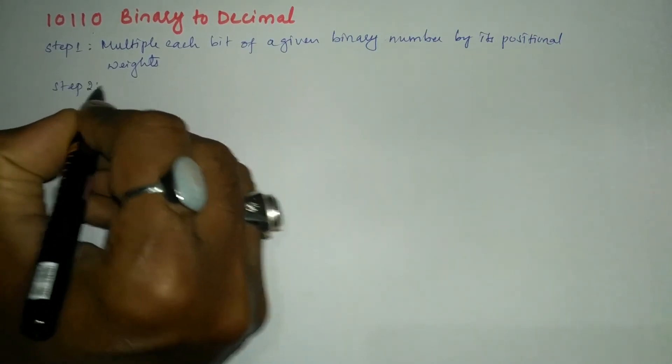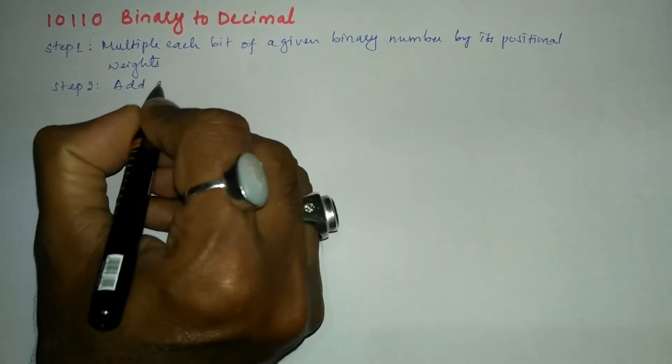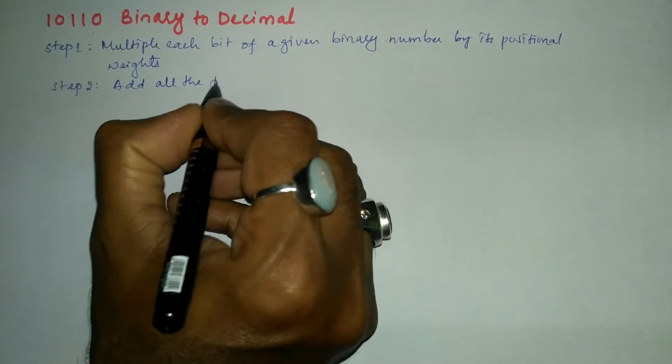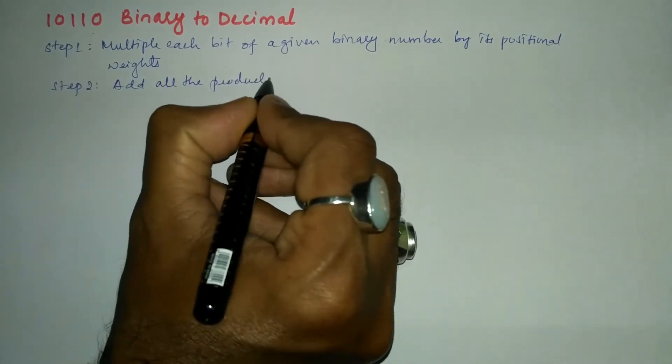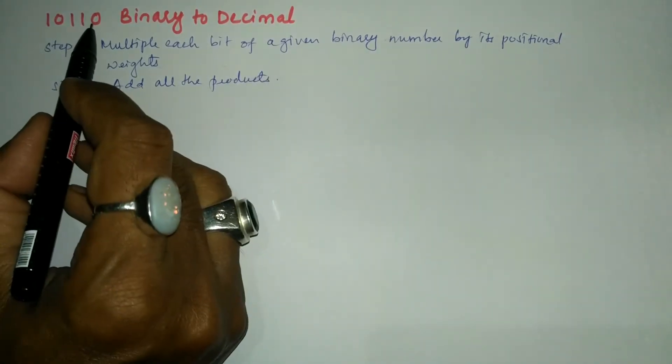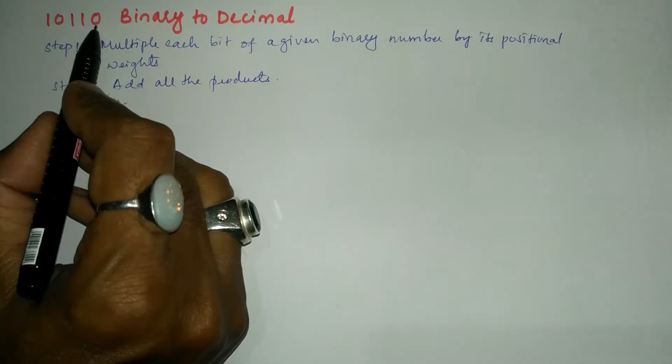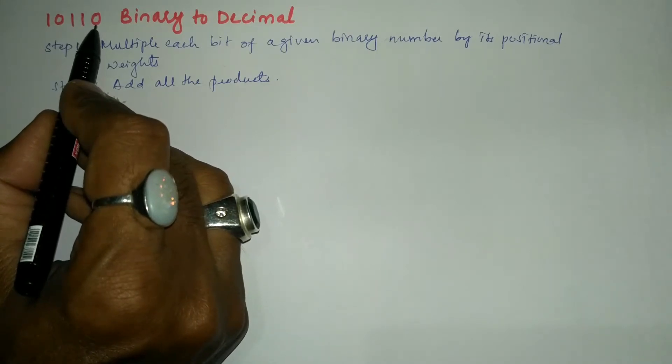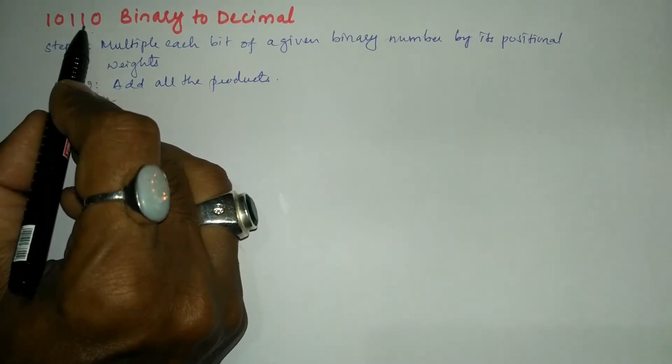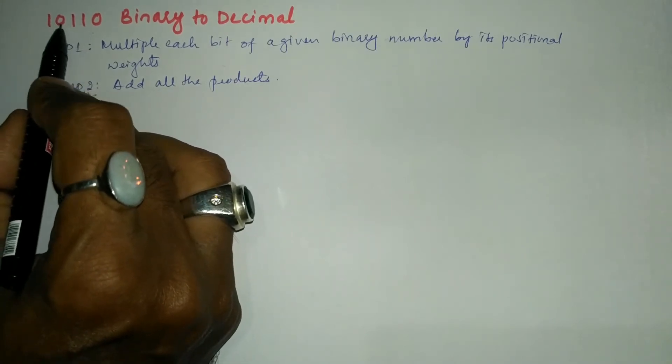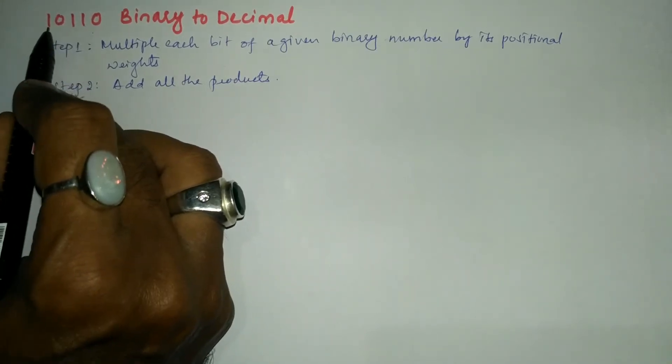...two: Add all the products. Now let us count the bits from the right hand side. The position of this bit is zero: zero, one, two, three, four. Here I'll write one...